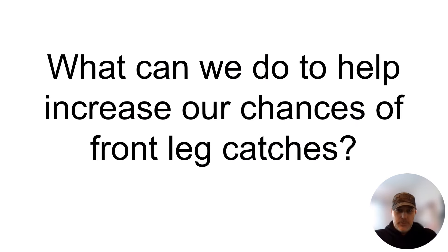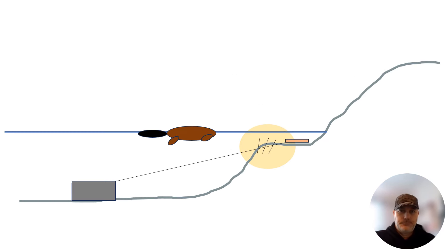What can we do to increase our chances of a front leg catch? What we need to do is elevate the ground before the beaver gets to your trap to make him start walking on his front feet. We do this by adding pencil-sized or a little bit smaller sticks to the ground at roughly the same elevation as your trap.